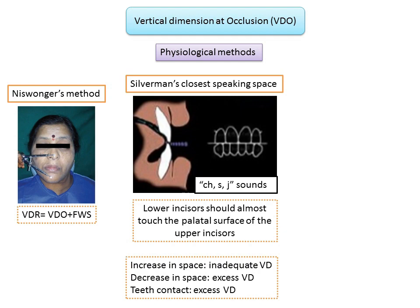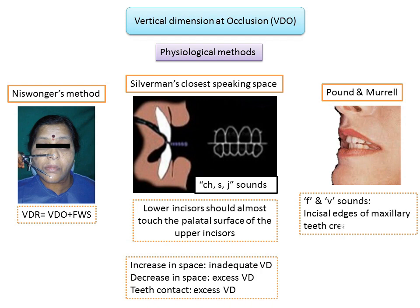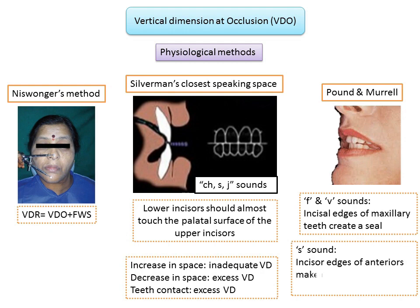Another method is given by Pound and Murrell — the F/V and S speaking anterior tooth relation. For F and V sounds, the incisal edges of the maxillary anterior teeth create a seal on the moist area of the vermilion border of the lower lip. For the S sound, the position of the mandibular anterior teeth is determined when the patient says words beginning with S. When S sounds are articulated, the mandible moves forward and the incisal edges of the anterior teeth do not make contact.